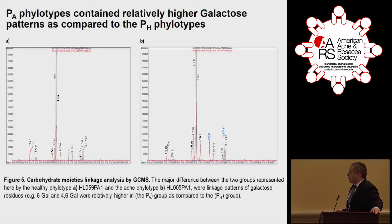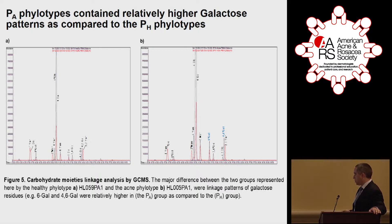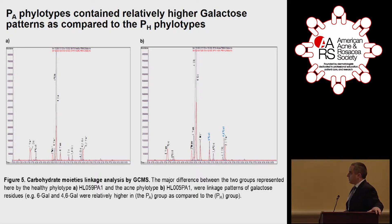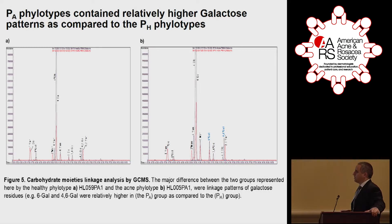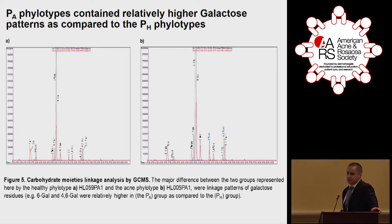We also ran a linkage analysis via GC-MS on the carbohydrate residues, and that showed that the PA phylotypes had relatively higher galactose patterns compared to the PH phylotypes — specifically, more 6-gal and 4-6-gal connection linkages in the PA group versus the PH group. This was to better characterize the molecules, and it may also serve as a platform in the future to target these linkage characteristics for future experiments to verify that what we're seeing really is carbohydrate and not some other contaminant.